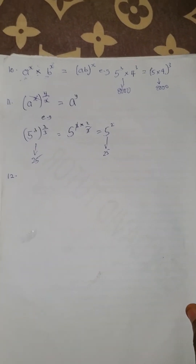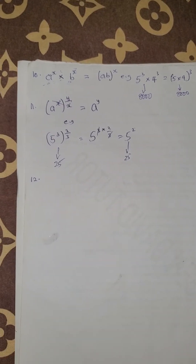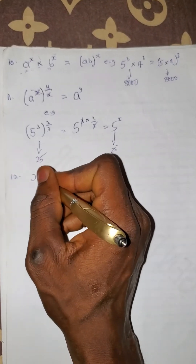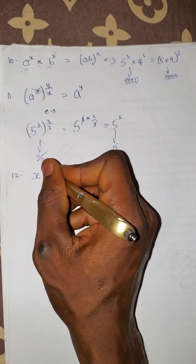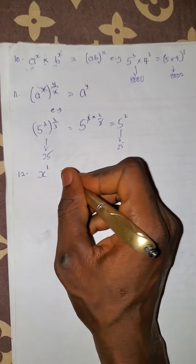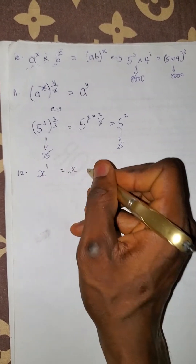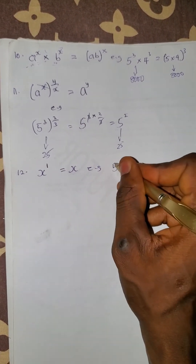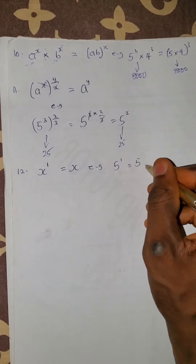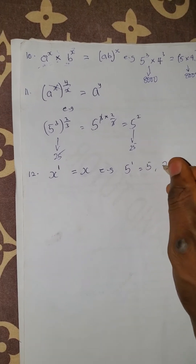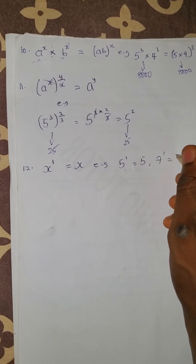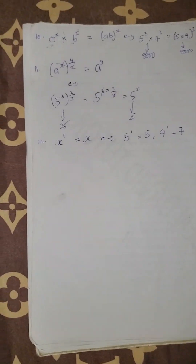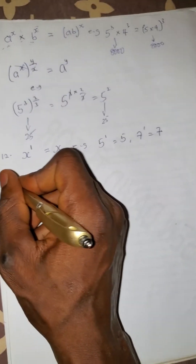Law 12: if you have anything raised to the power of 1, the answer is just that number itself. So 5 raised to the power 1 is 5. 7 raised to the power 1 is 7. 3 raised to the power 1 is 3.